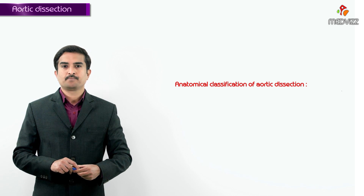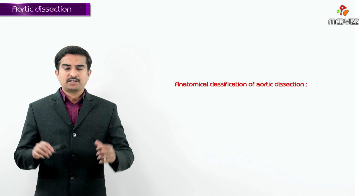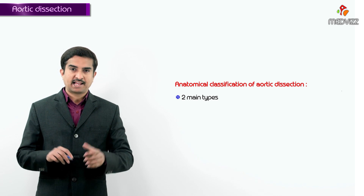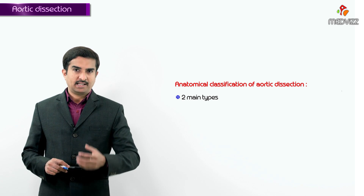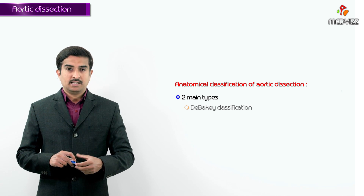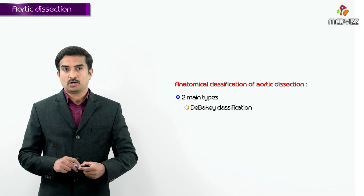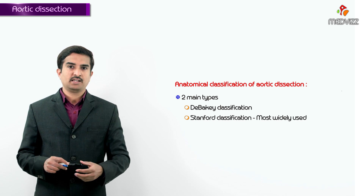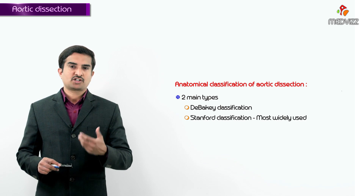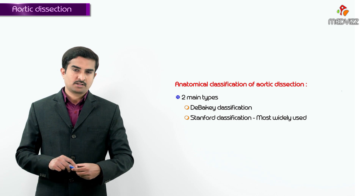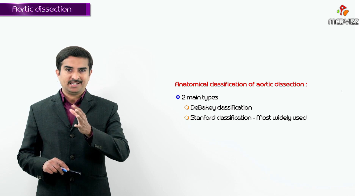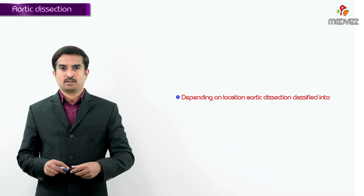Let us talk about the anatomical classification of aortic dissection. There are two main anatomic classifications used: one is called the DeBakey classification and another is called the Stanford classification. These days we most widely use the Stanford system, which classifies dissections based on location — whether they are proximal or distal.